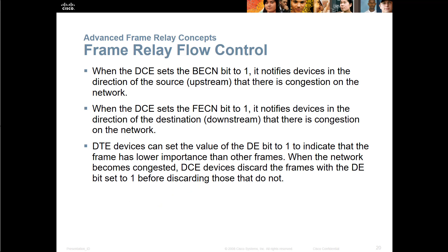Moving on is flow control. The flow control is when the DCE sets the BECN bit to one, it notifies the device in the direction of the source, or upstream, that there's congestion on the network so you can control the flow rate. For downstream, it's going to be the FECN bit set to one, which notifies that there's congestion. A big part of flow control is making sure reliability and flow are still working. If not, we can put hold-back timers in place so that we're not overloading a link.